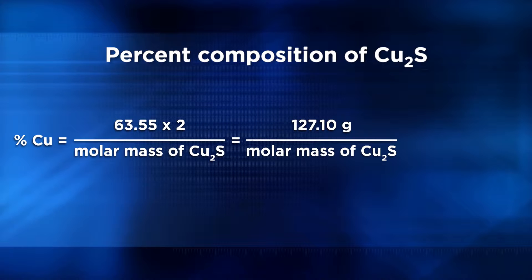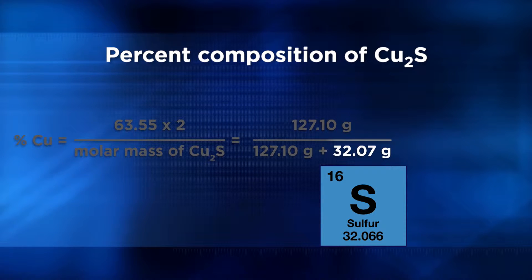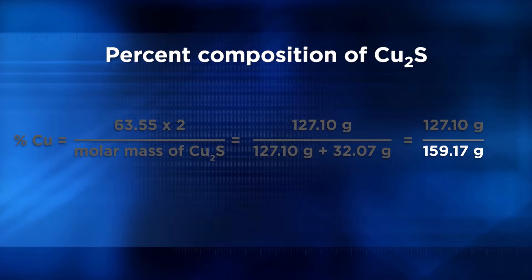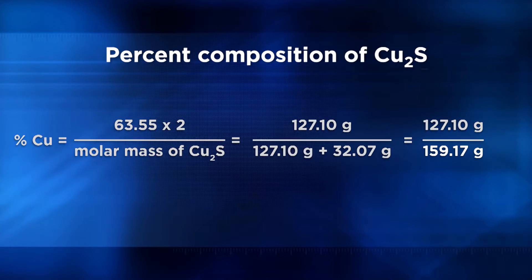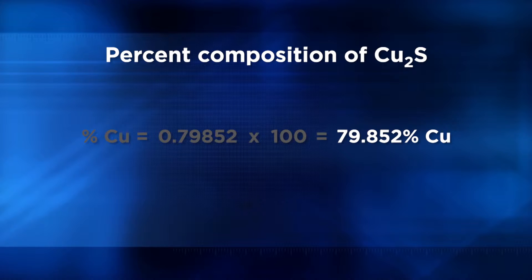The molar mass of copper 1 sulfide is calculated by adding 127.10 plus the mass of 1 mole of sulfur, 32.07 grams, for a total molar mass of 159.17 grams. Divide the numerator, 127.10 grams of copper, by the denominator, 159.17 grams of Cu2S, and you get 0.79852. Then multiply that by 100, and we find that copper makes up 79.852% of Cu2S. Another way to say that is the percent by mass of the compound is 79.852% copper.